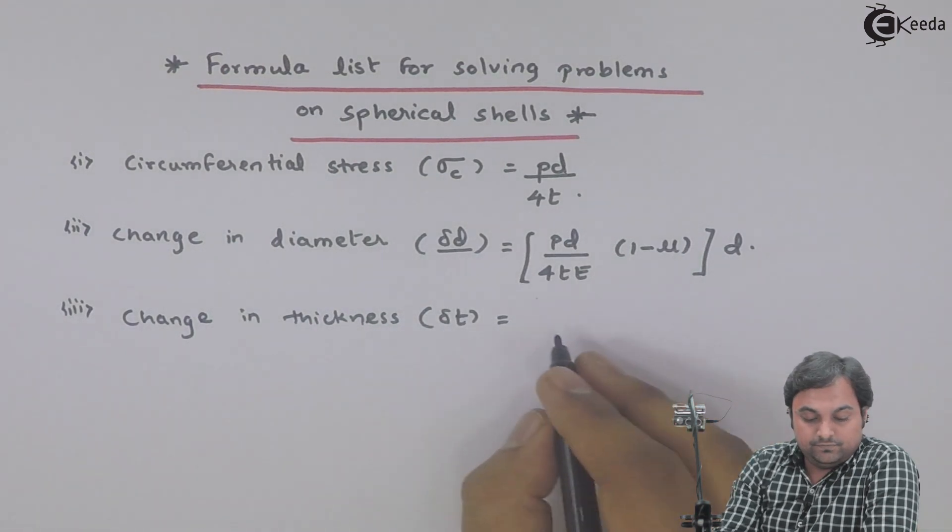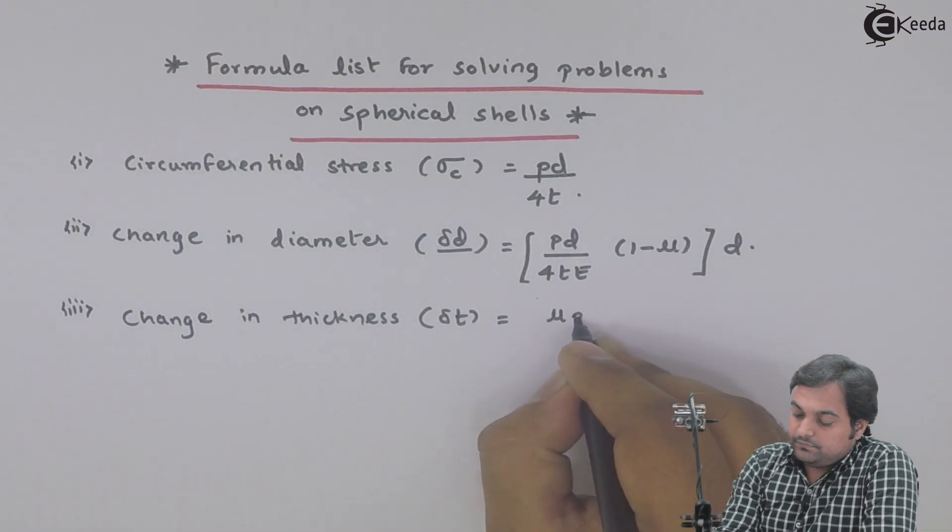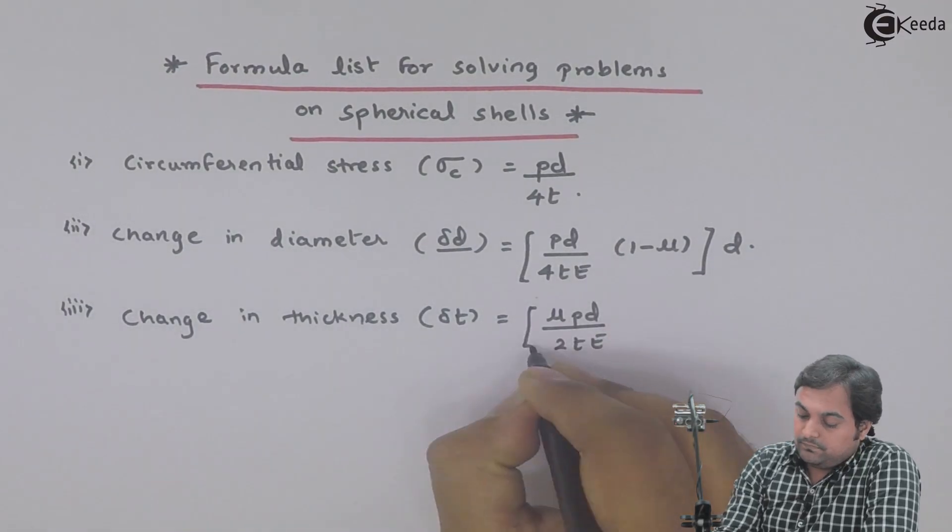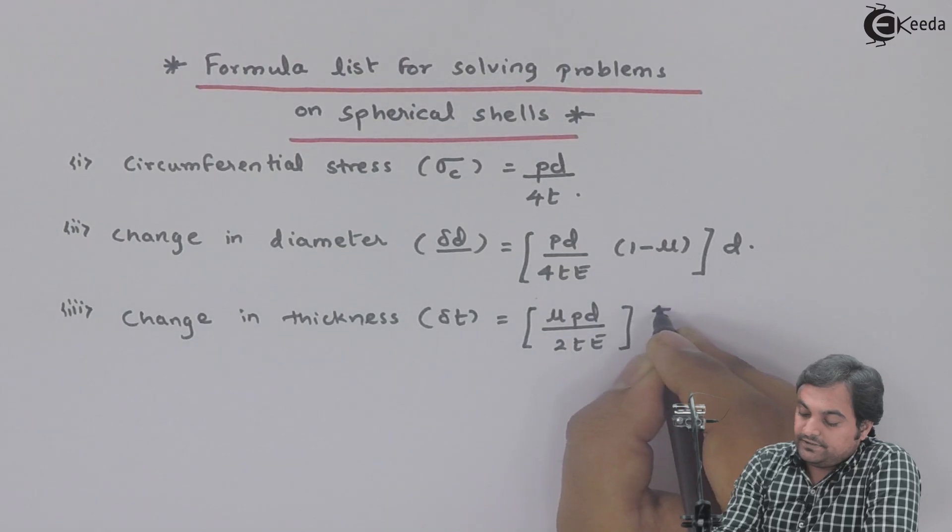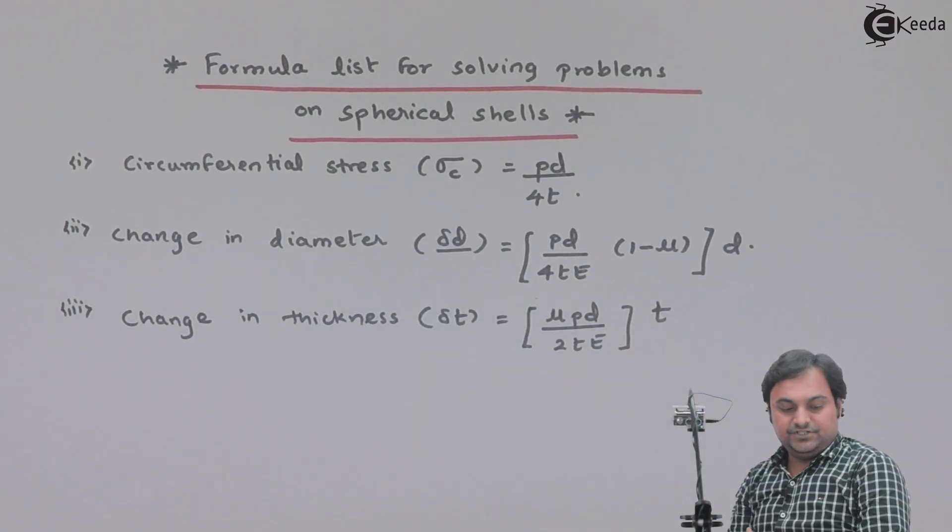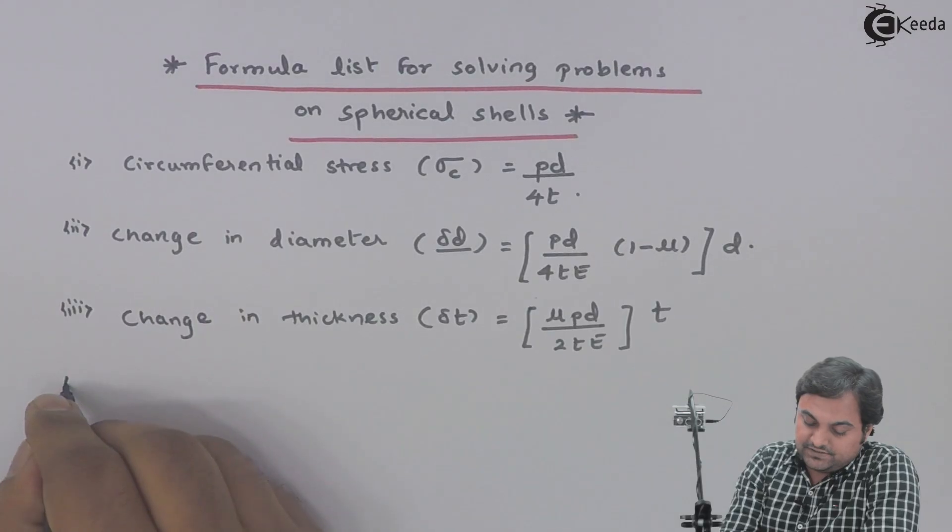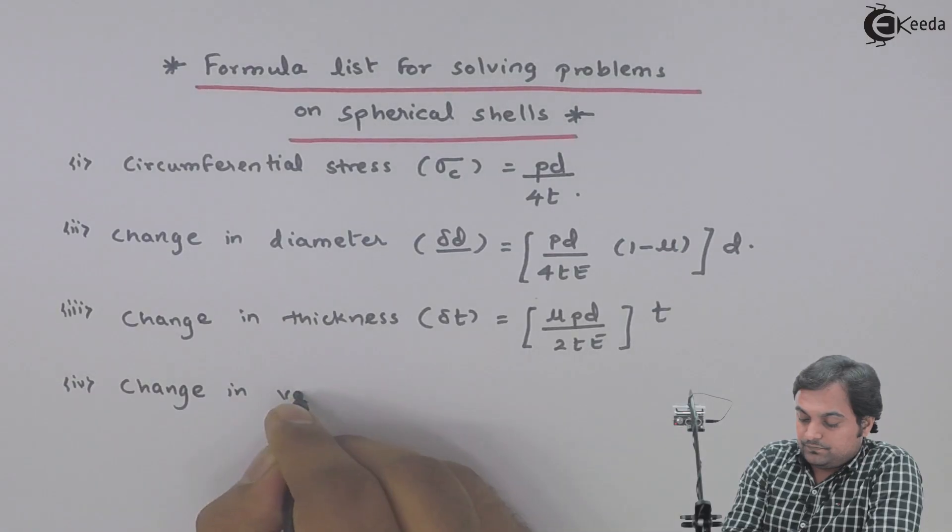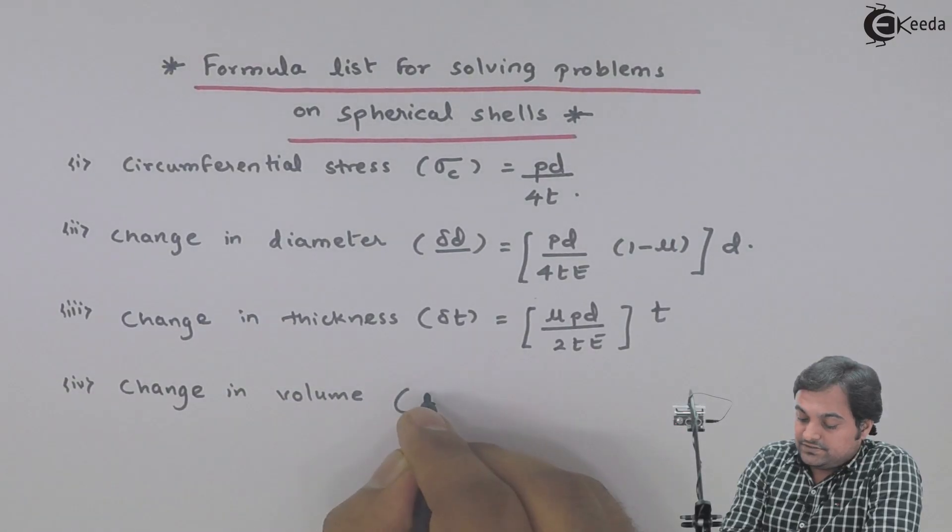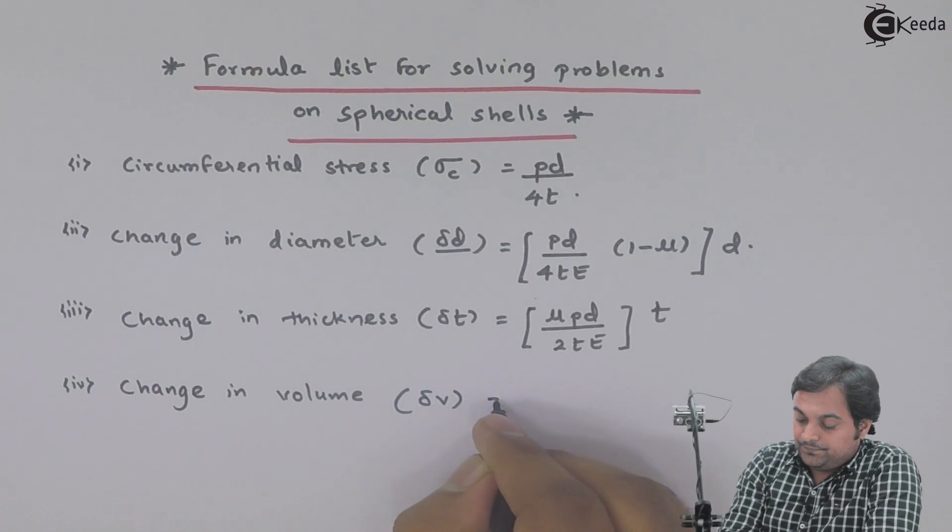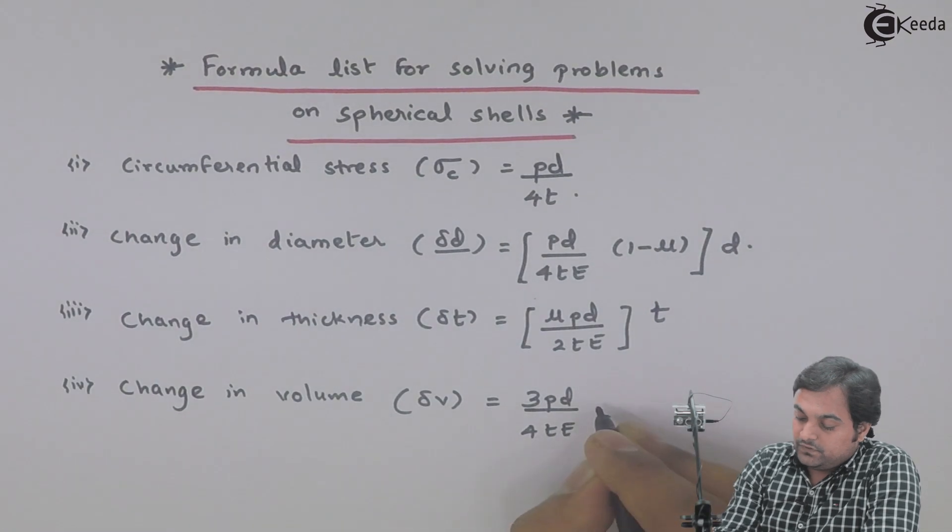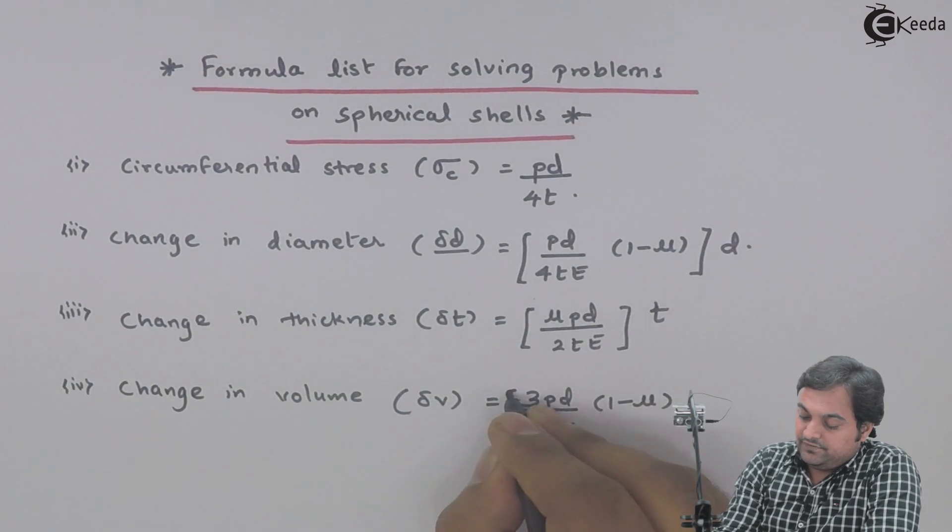That will be equal to mu into PD upon 2TE multiplied by T. So here I have the next formula of change in thickness. Then at last we have the formula for change in volume, and that is delta V equals 3 times PD upon 4TE into 1 minus mu, and we have to multiply here by original volume.